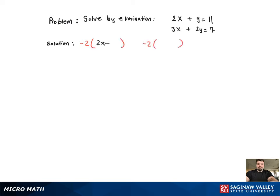So if I multiply the first equation by negative 2 on both sides of the equals sign, I'll get a negative 2 for the coefficient of y, which will cancel with the positive 2y in the second equation.